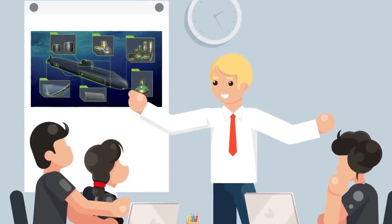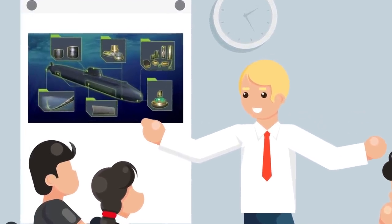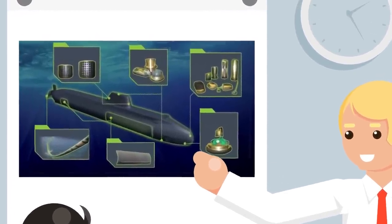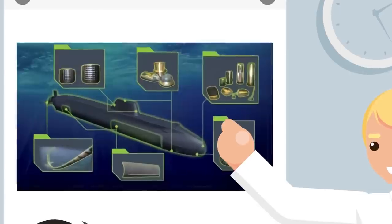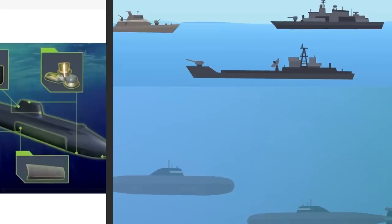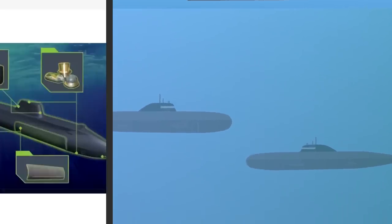34. Computers are even better at identifying ships by the sounds they make than humans though, and the most advanced sonar systems can even identify individual vessels by the unique sounds they make due to their specific construction, variations in materials, and tiny flaws or imperfections in their engines or propellers.